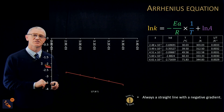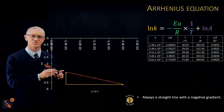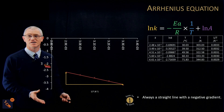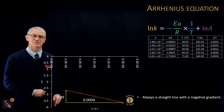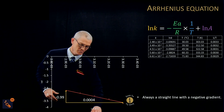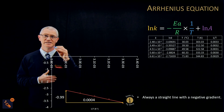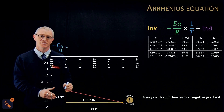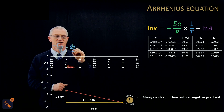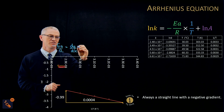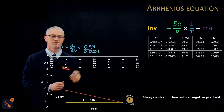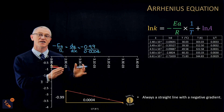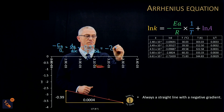To find the gradient, we calculate the difference in y divided by the difference in x, using two points from the line. If you've drawn the graph, do this on your own — don't expect it to be exactly the same as mine, just very similar. Taking the two numbers from the graph: the difference in y is −0.99 and the difference in x is 0.0004, which gives a gradient of −2475.